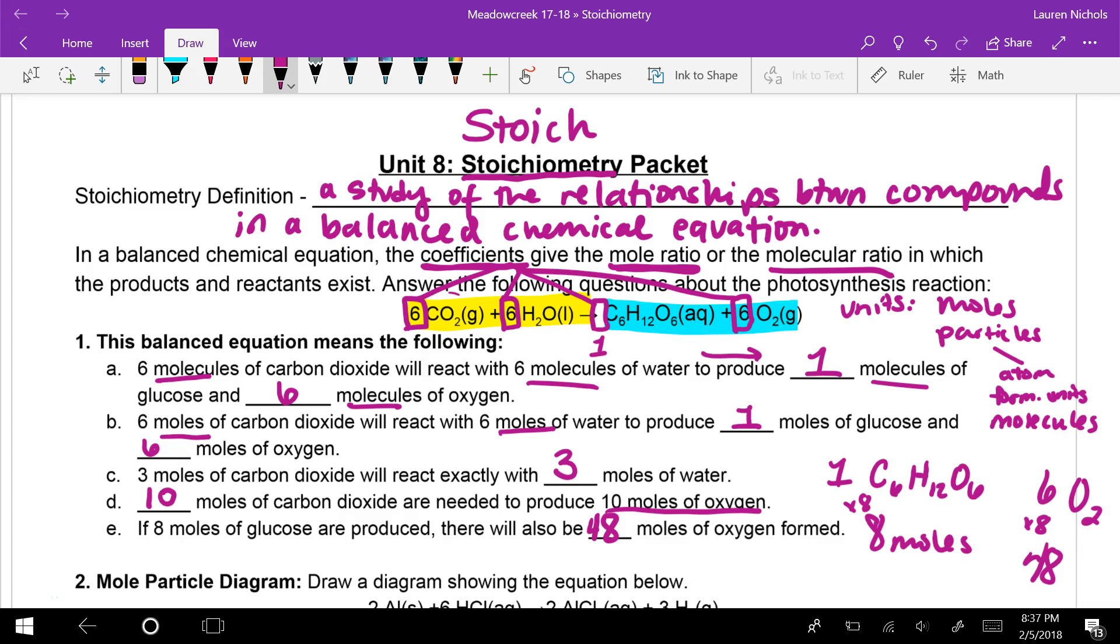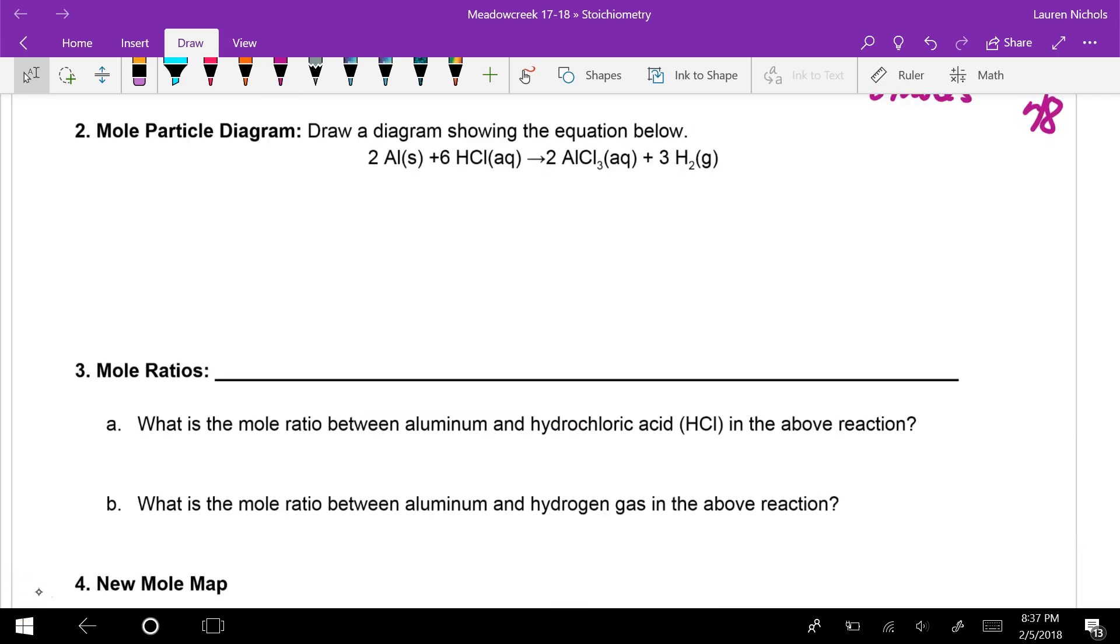So let's now look at our mole particle diagrams. The mole particle diagram is just a diagram or a picture that describes the equation. So because not all of you are going to have colors out beside you, we're going to use colors and shapes to indicate the different types of elements present. So we see that we have aluminum, hydrogen, and chlorine in our equation.